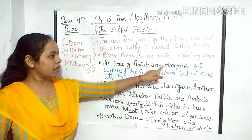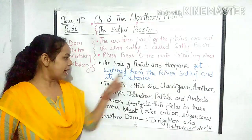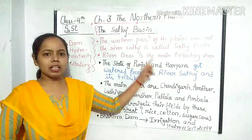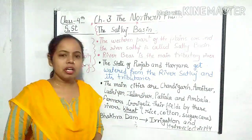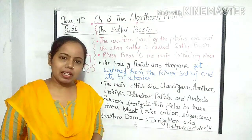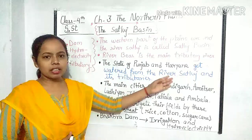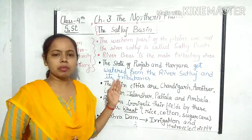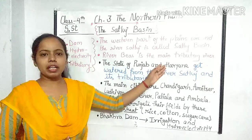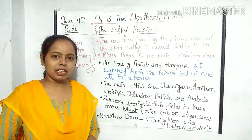The states of Punjab and Haryana get watered from the river Satluj and its tributaries. Punjab tatha Haryana mein pani ki jo bhi supply hai, woh Satluj nadi tatha usse judi hui main tributary rivers ke dwara hoti hai.